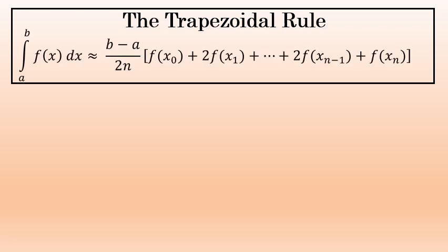The trapezoidal rule states that the definite integral from a to b of any f of x dx is approximately equal to b minus a over 2n, where n is the number of trapezoids used for the approximation. The more trapezoids you use, the larger n is, the more accurate the approximation will be, but also the more work it will take. The number of terms in the brackets will always be one more than the value of n. The coefficient on each term except for the first and last is 2, while the first and last terms have a coefficient of 1.